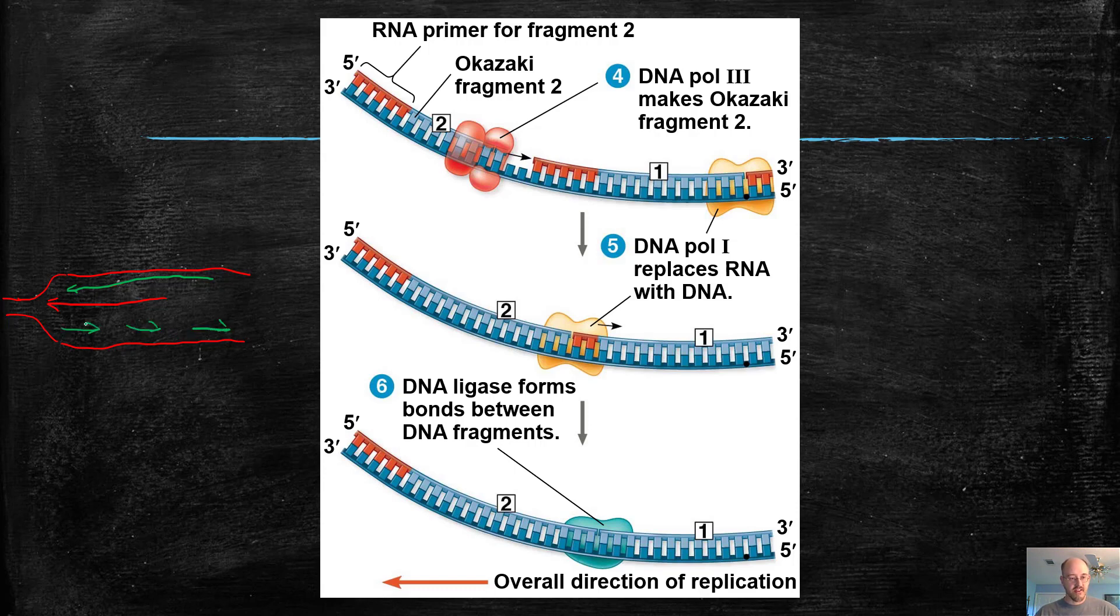As new DNA is exposed by helicase, it's copied until it runs into the previous fragment. And then as this unzips, the next piece will be made here, and so on and so forth. So it's built in the wrong direction in little chunks. And then they're all going to be glued together.